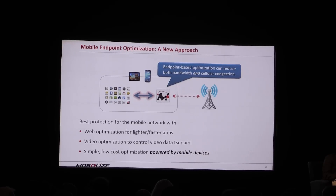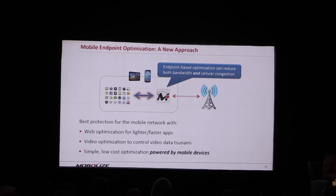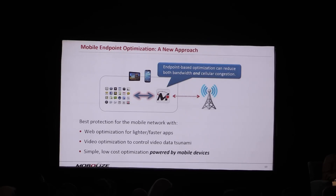By having a simple application, it changes everything about how optimization is deployed and managed. Think about a massively distributed form of optimization that leverages the entire user base to enable optimization intelligently and selectively on a per-user basis — without the cost of infrastructure or operating expenses for network optimization infrastructure — and allows you to selectively expand capacity when you need it, at the time you need it.